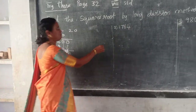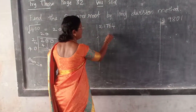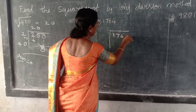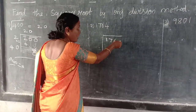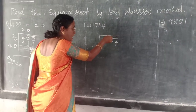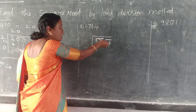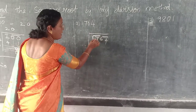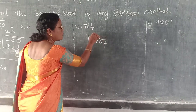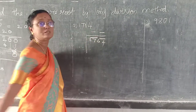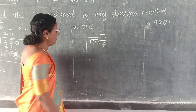Next one: 1 7 6 4. From the unit place you have to draw a bar — 2 digits at a time. So the answer will be in how many digits? 2 digits.